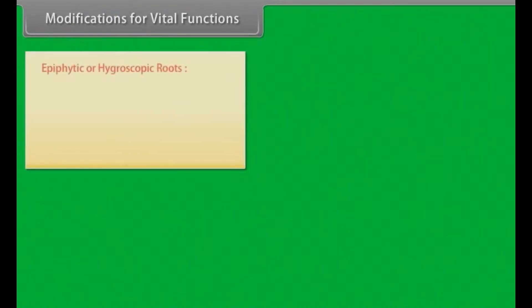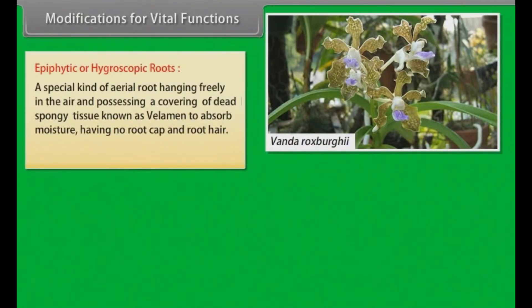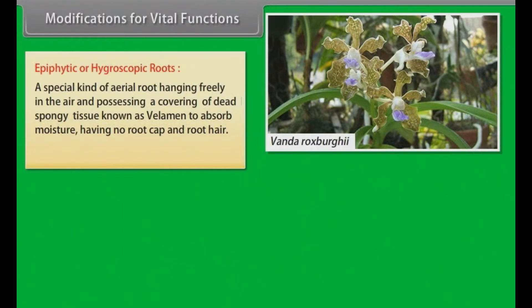Modifications of roots for vital functions. Epiphytic or hygroscopic roots: A special kind of aerial root hanging freely in the air and possessing a covering of dead spongy tissue known as velamen to absorb moisture, having no root cap and root hair. Example: Vanda, etc.